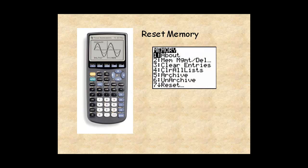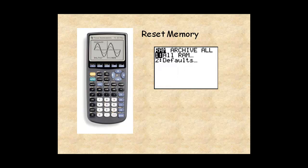Go back to the memory menu, use the down arrow key to select Reset, the seventh item on the menu, and press Enter. The calculator shows the reset memory screen.